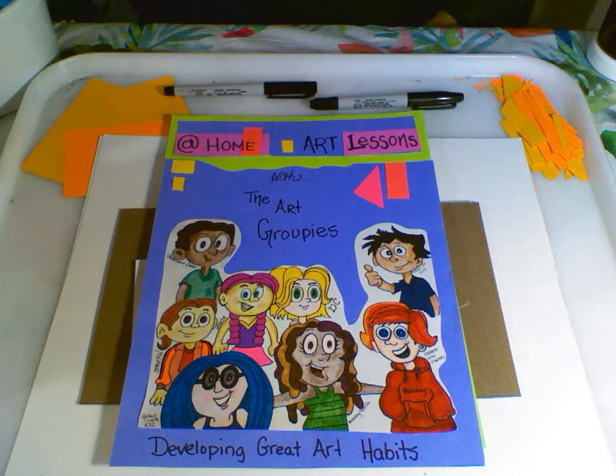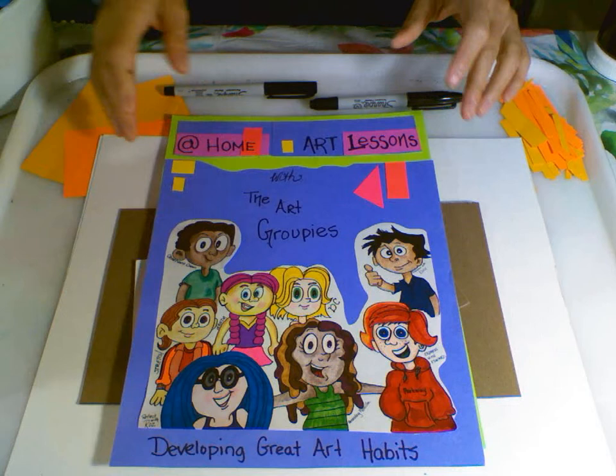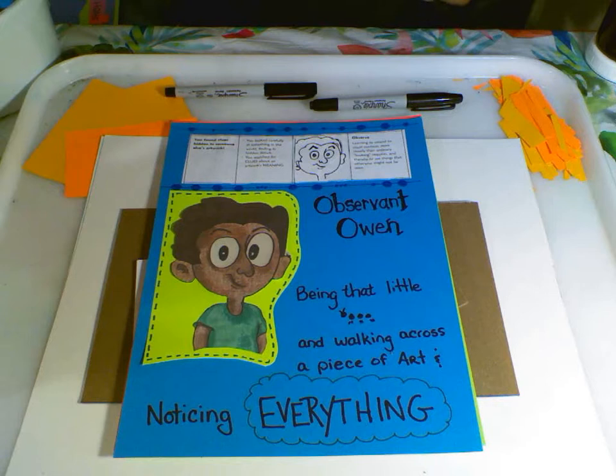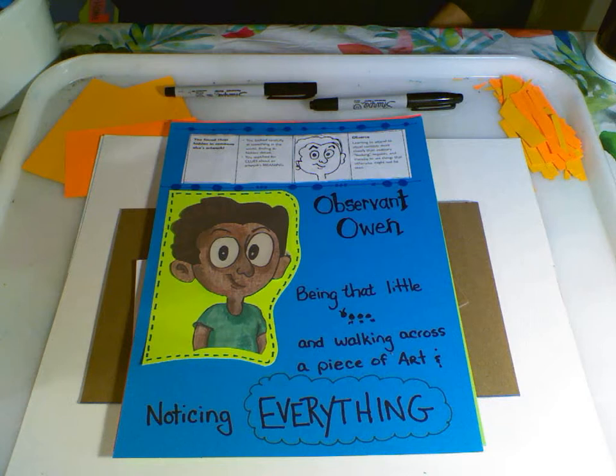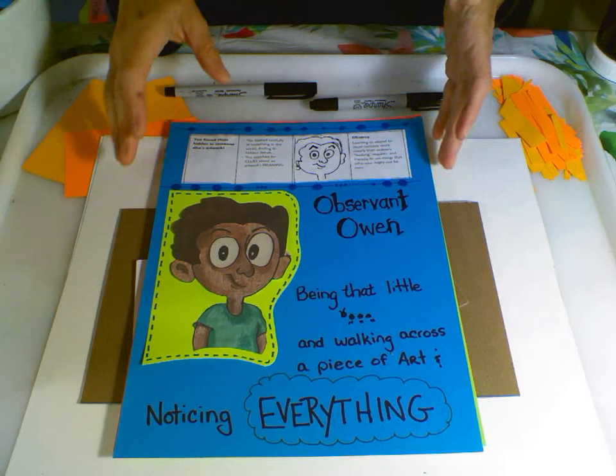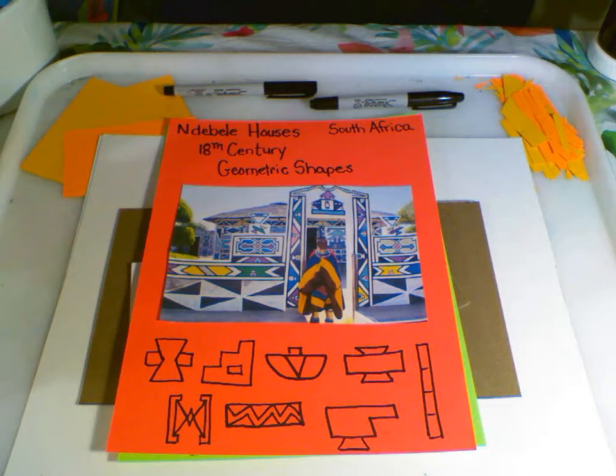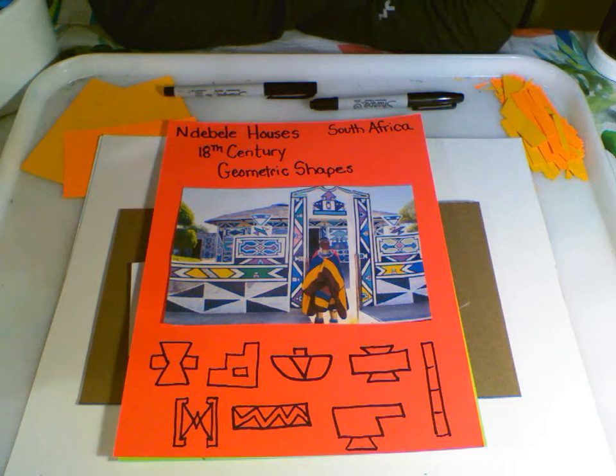Hi and welcome to at-home art lessons with the Art Groupies, where we develop great art habits. We're going to be working with this groupie, Observant Owen. Observant Owen is like a little ant who walks quietly but very observantly across a piece of artwork — and he notices everything. So we're going to be like that little ant, walking across pieces of art.